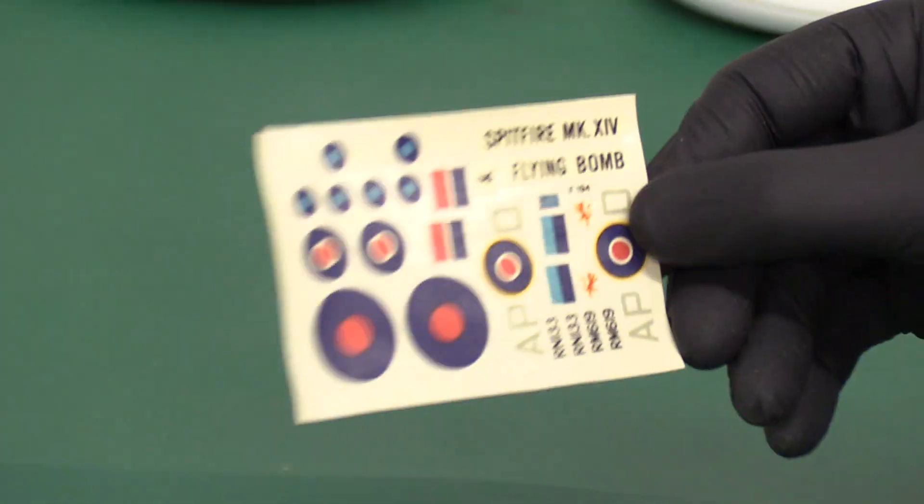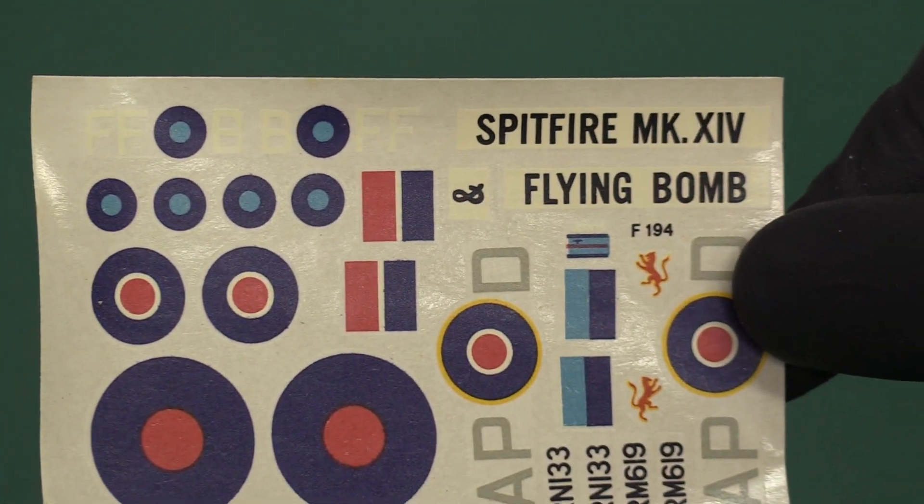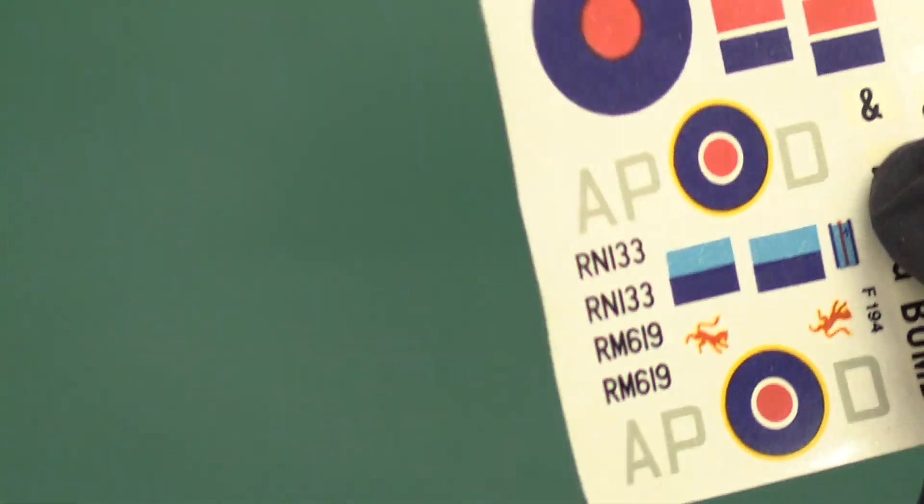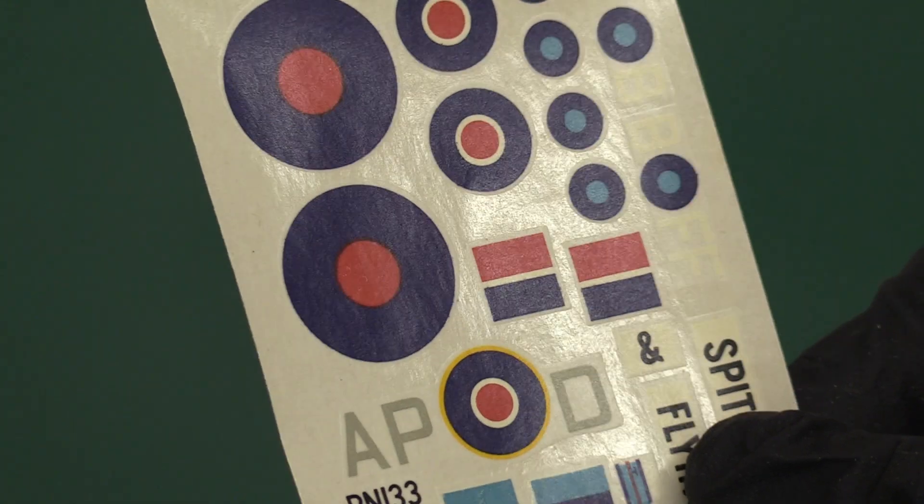We'll take that out of the bag. And then we'll have a look at these decals which are over here. Spitfire Mark 14 and flying bomb, and it's got the ampersand separately. Can you see that? How bizarre.